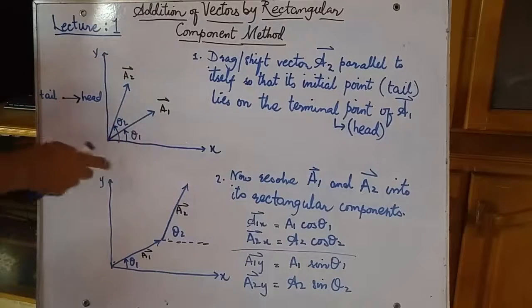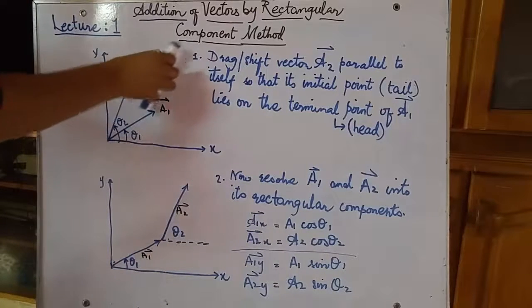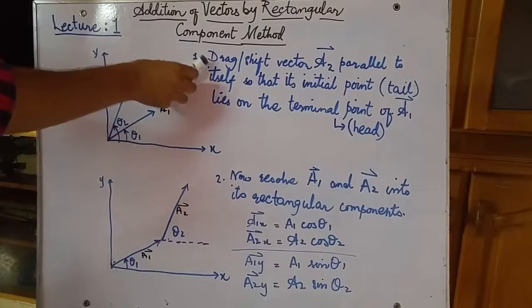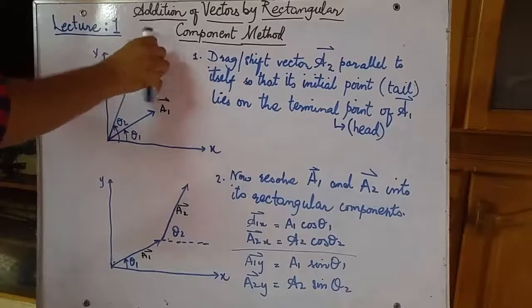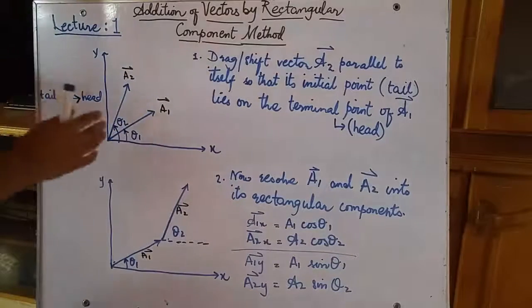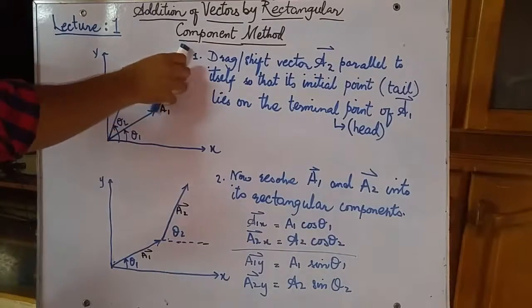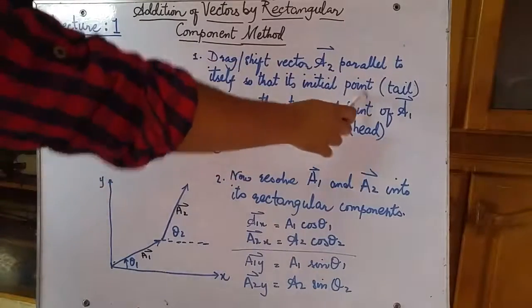Suppose I dragged it to here. So I dragged it parallel, not changing its angle. I cannot change the angle; I need to shift it parallel so that I can keep the angle intact as it is. Okay, so drag or shift vector A2 parallel to itself so that its initial point—its initial point is its tail—so that its initial point lies on the terminal point of A1.